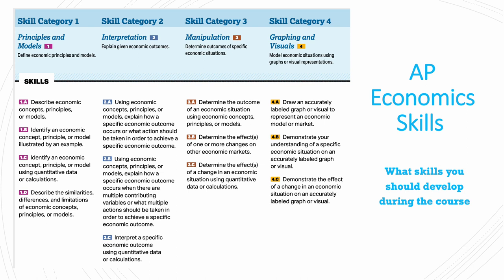The third skill category would be manipulation, which is to determine outcomes of specific economic situations. You determine the outcome of a situation using economic models or concepts, and you would determine the effects of one or more changes in economic markets, and you would also determine it using quantitative data or calculations.